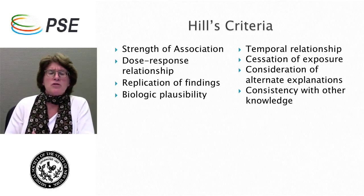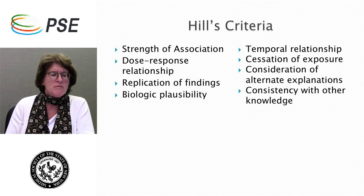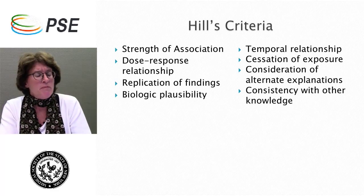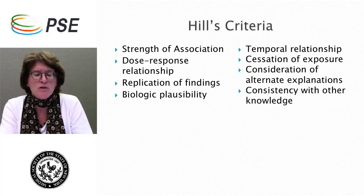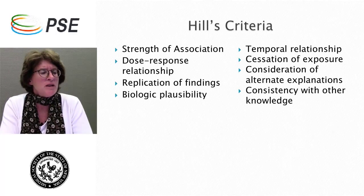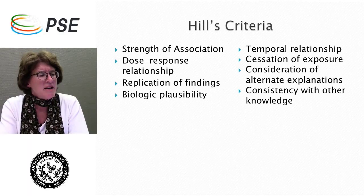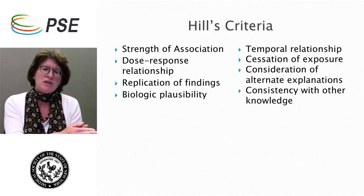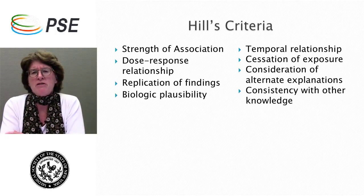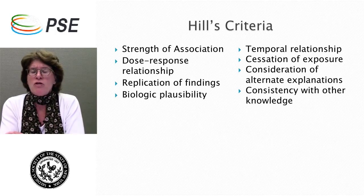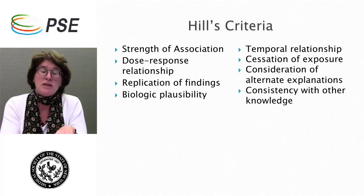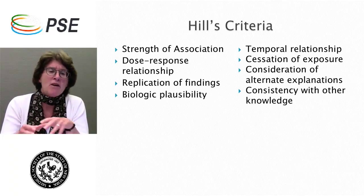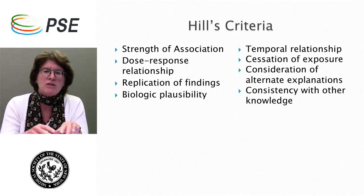We use something called Hill's criteria. Sir A. Bradford Hill was a British epidemiologist and statistician who very eloquently set up this criteria. The criteria for assessing the relationship between a risk factor and a disease must be met by a series of factors. How strong is that association? Statistics I'll talk about later will give you an indication of how strong the association is between the risk factor and the disease. If it's weak, you really can't go forward and say that X causes Y.